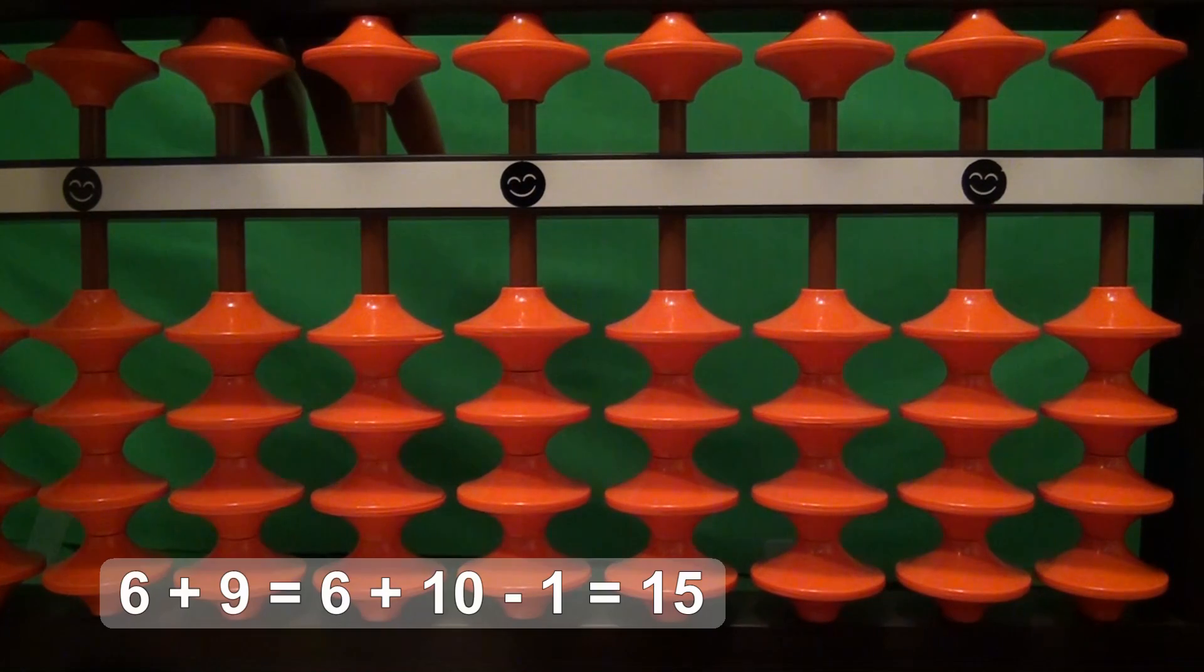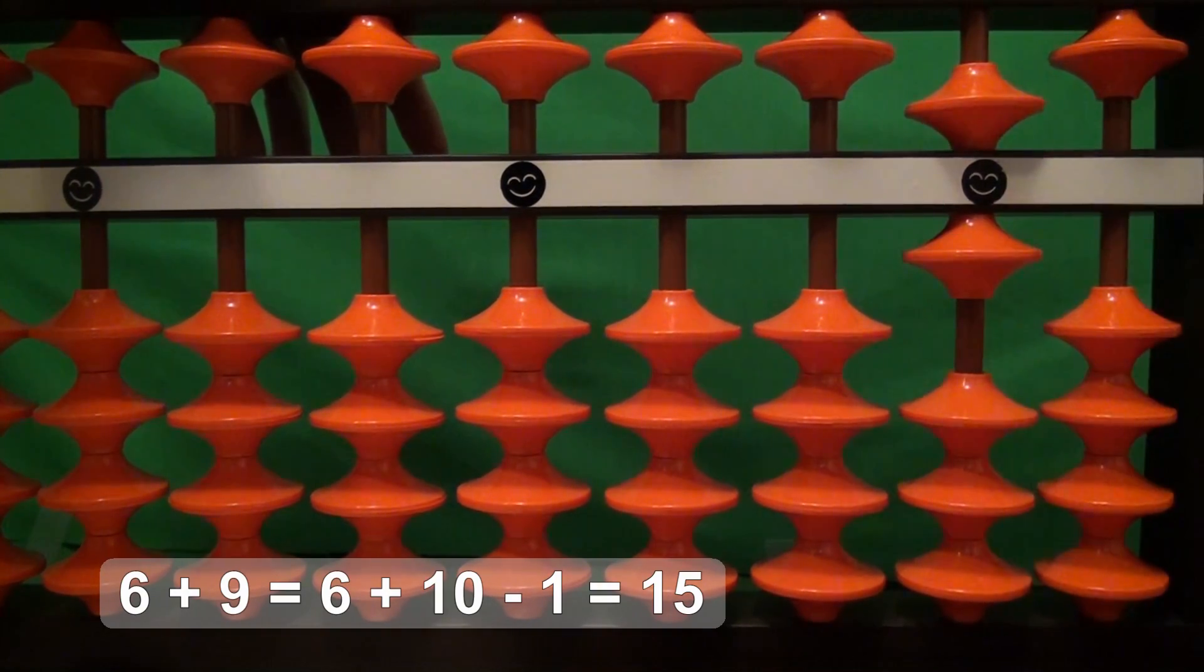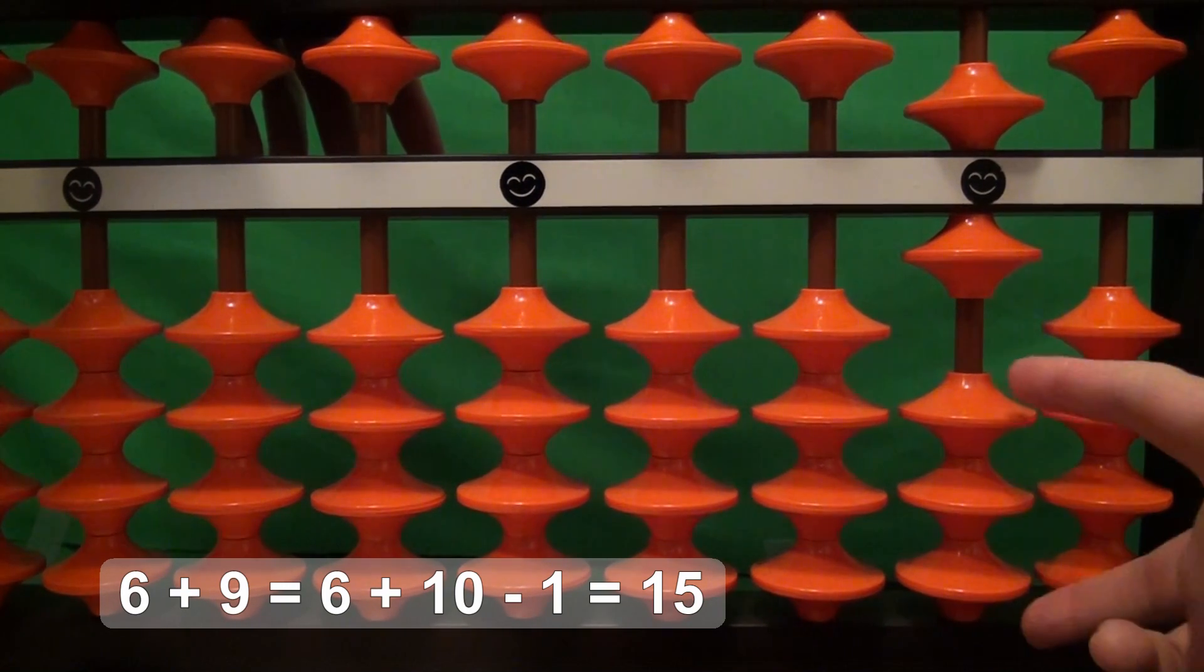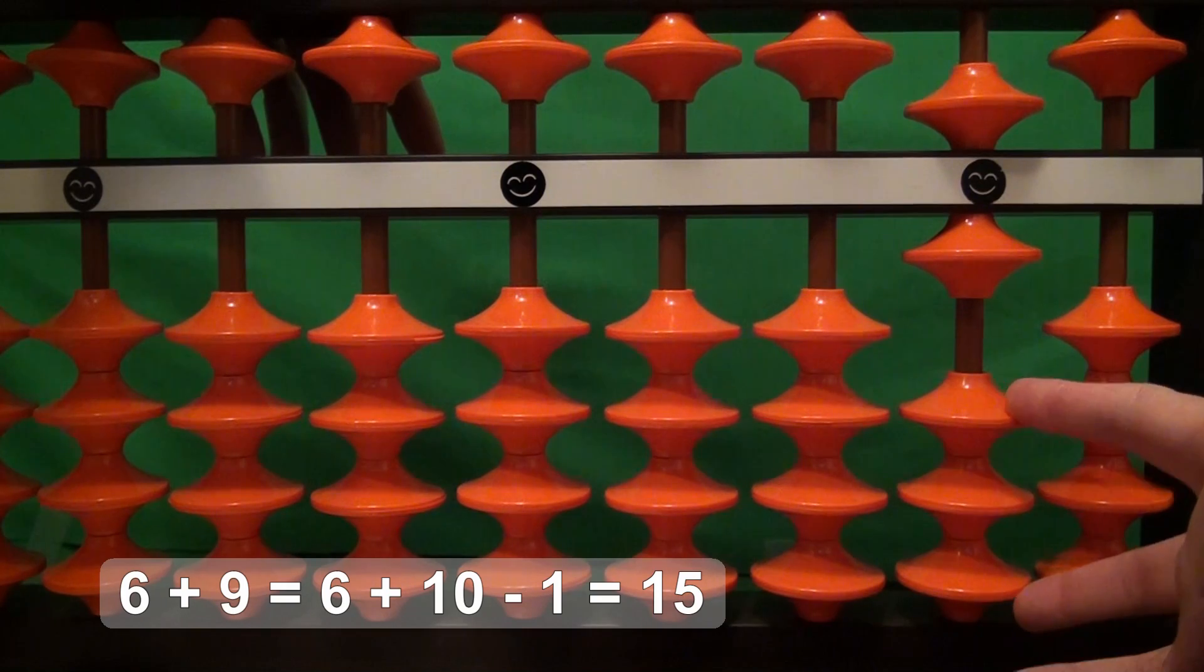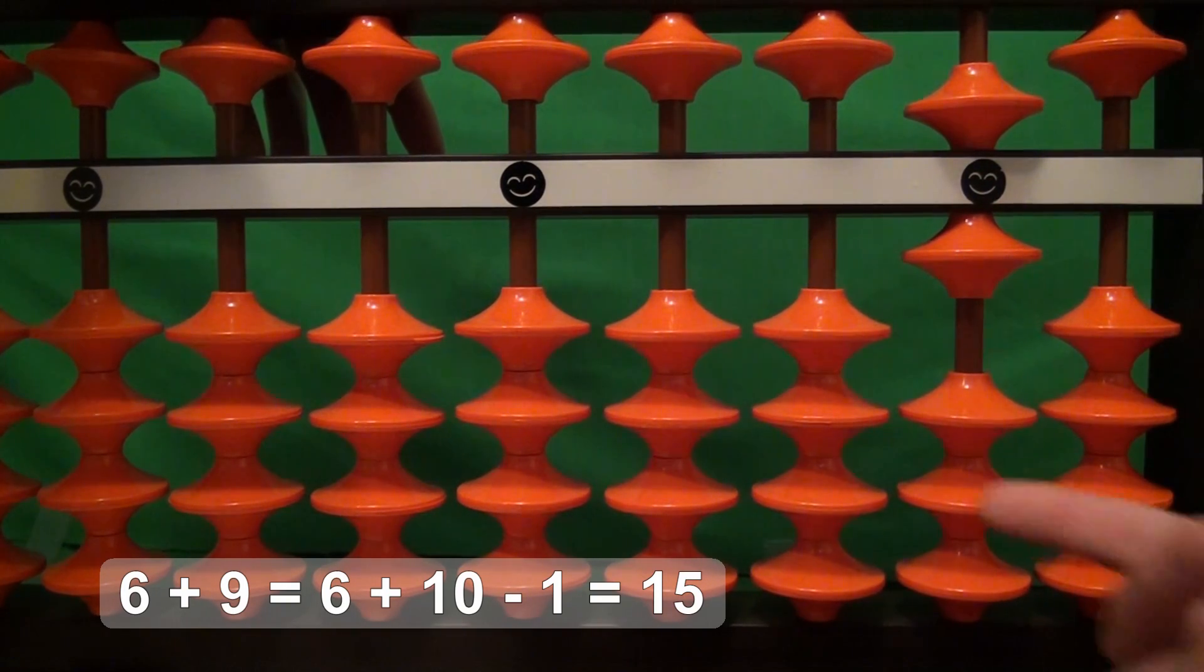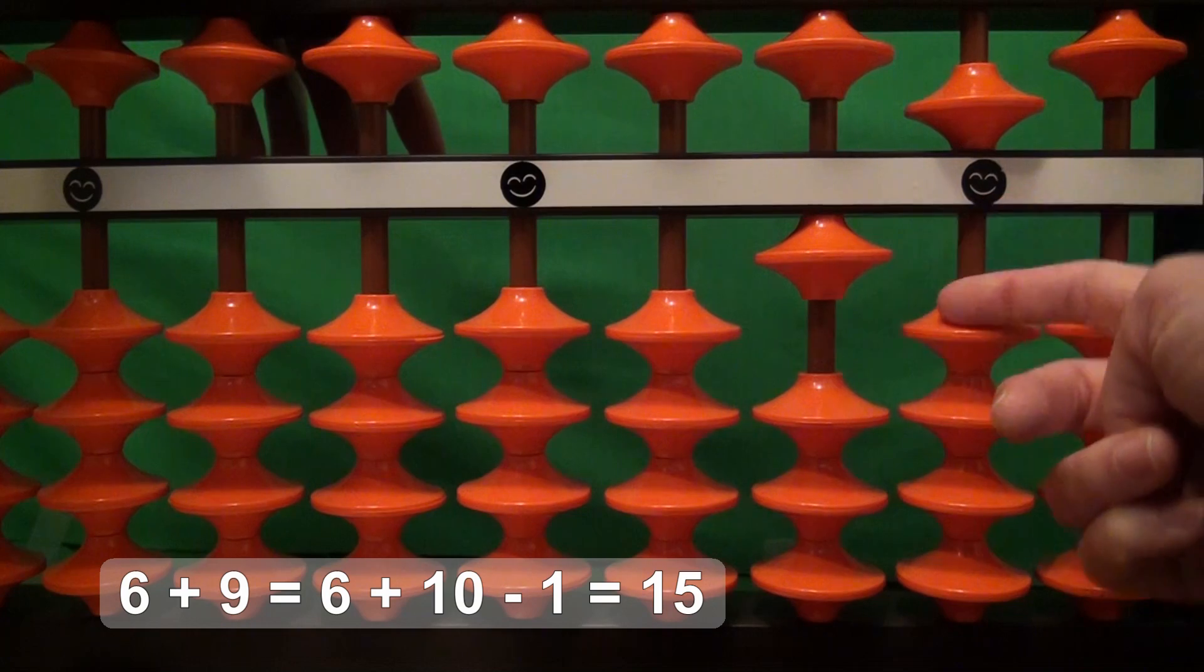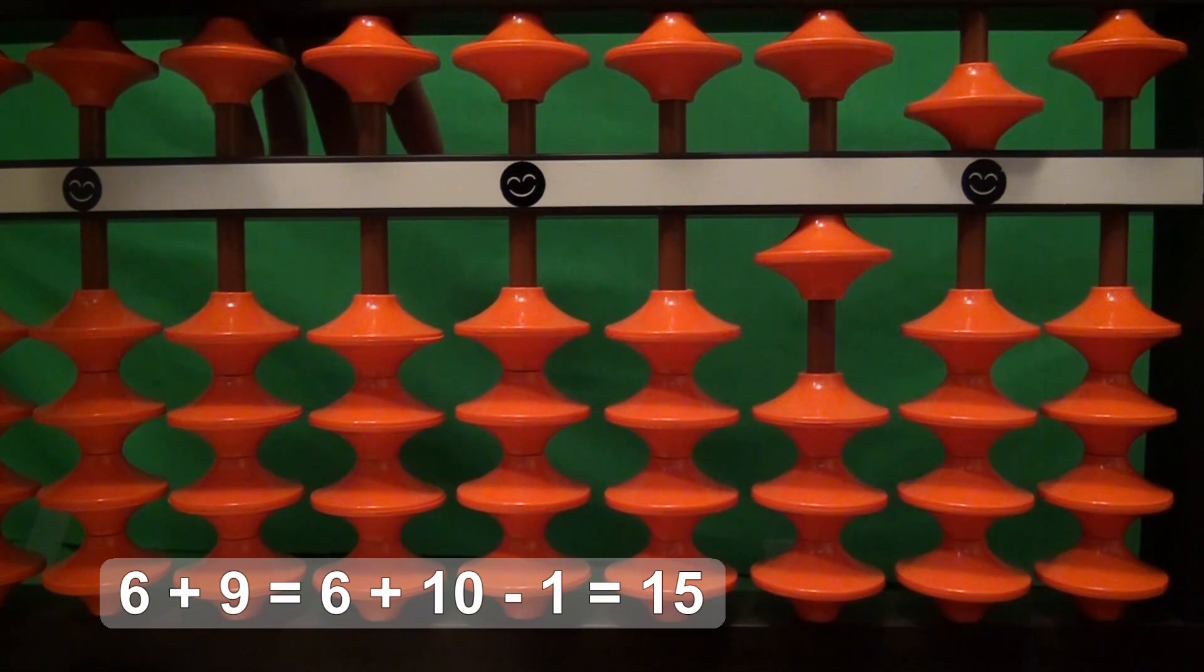The next problem, 6 plus 9. 6 is 5 and 1. We want to add 9. We don't have 4 beads that we can use and we don't have a 5 bead that we can use. So we have to add 10 and take away 1. 10 minus 1 equals 9. So we've just added 9 and our answer is 15.